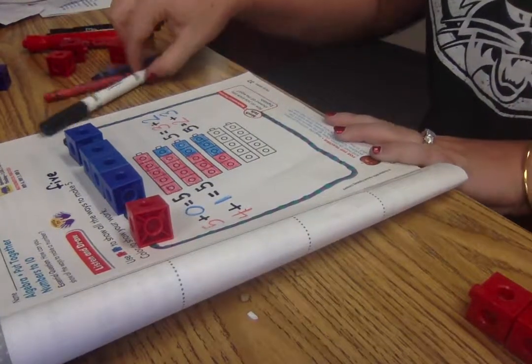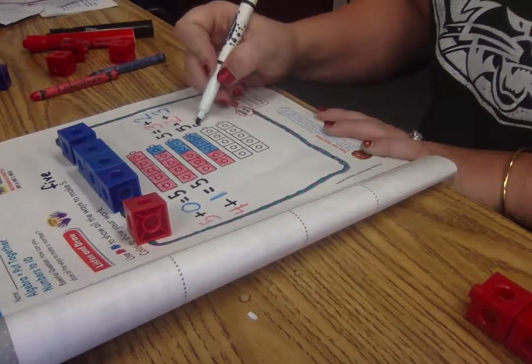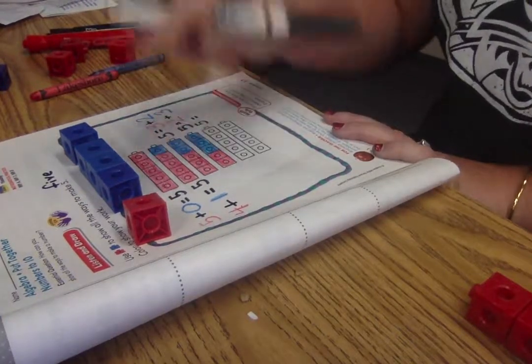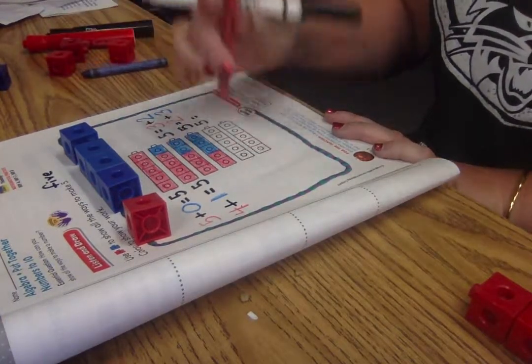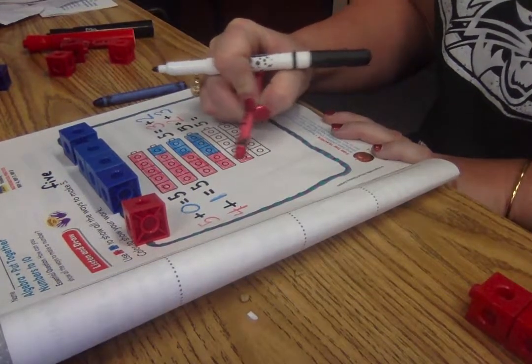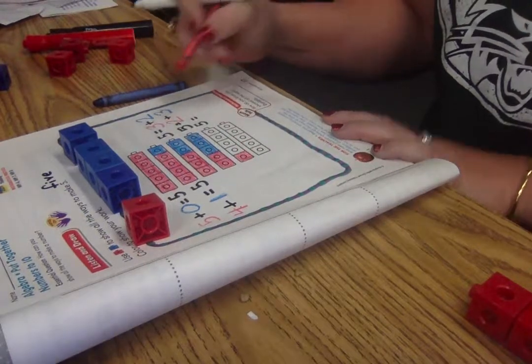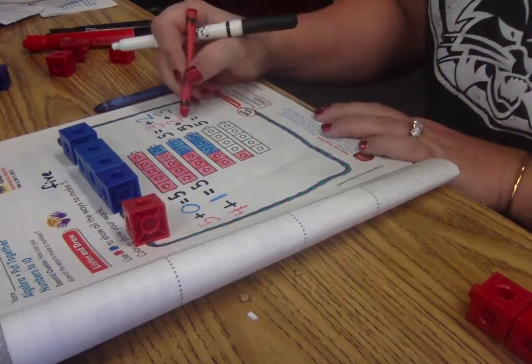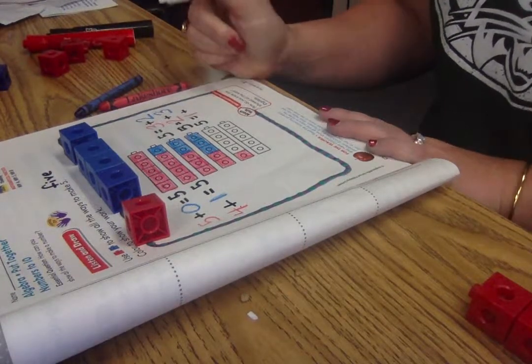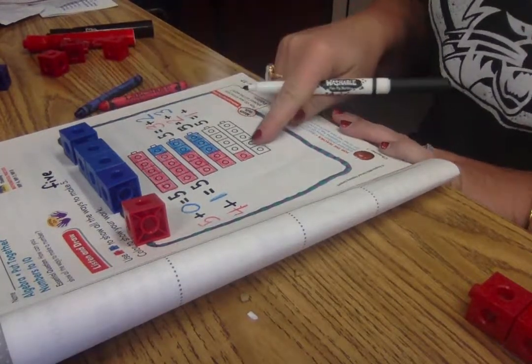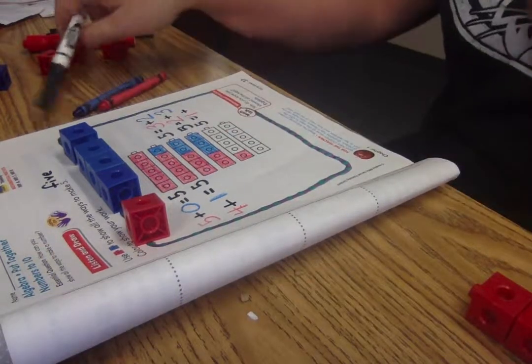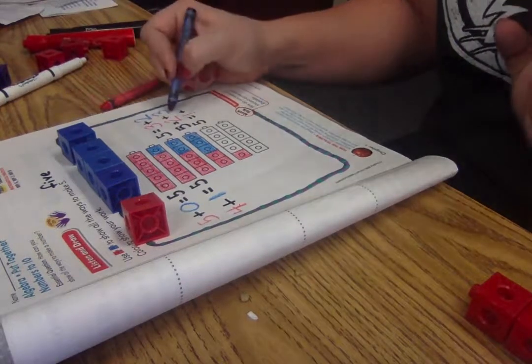So I know that I have five to start with. God bless you. And I only have one red cube. All by myself. Just one. And I need to add, please show me down low with your fingers, how many more do I need to add in blue? If you have four, give yourself a silent celebration. That is correct.